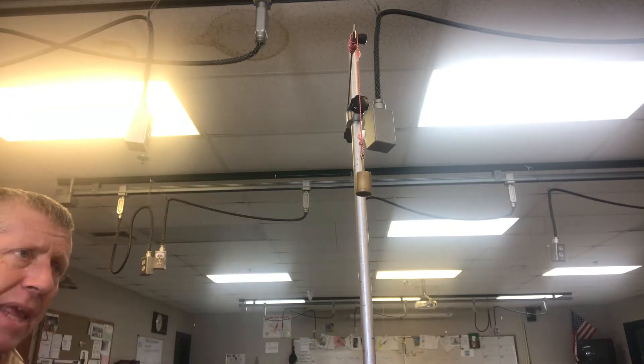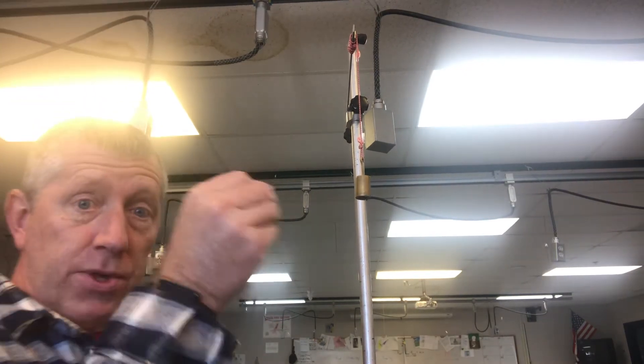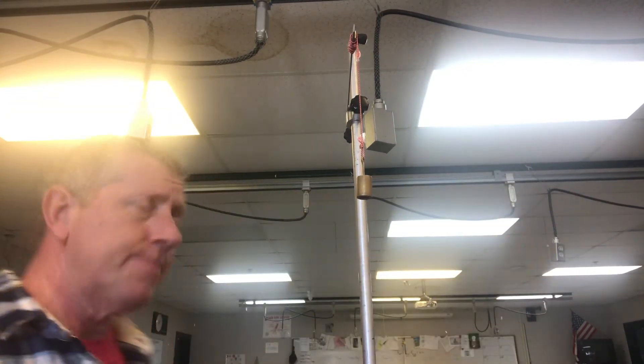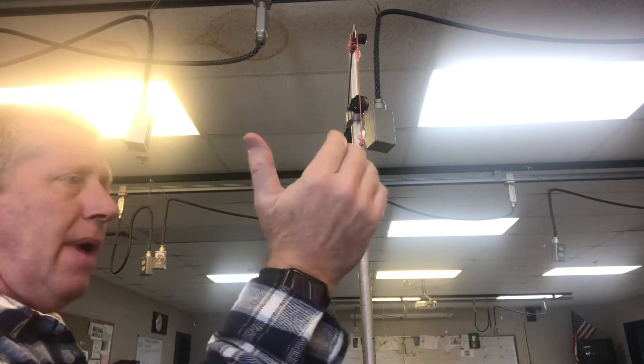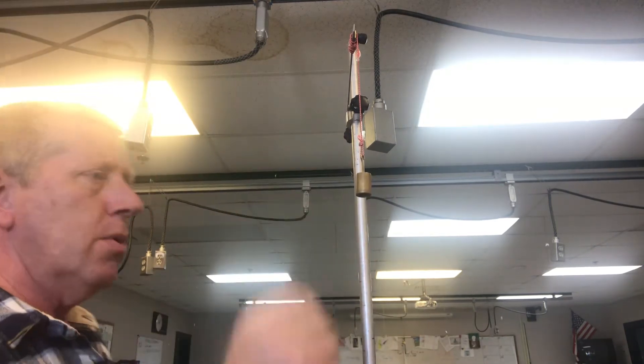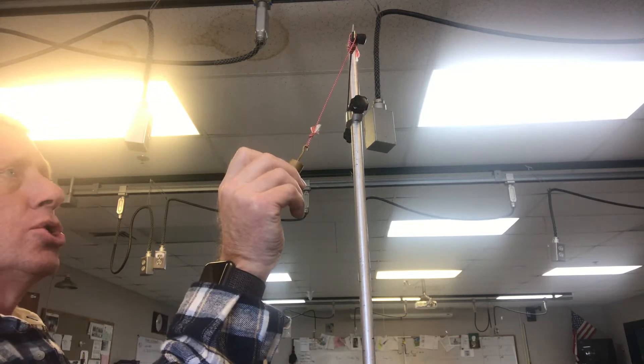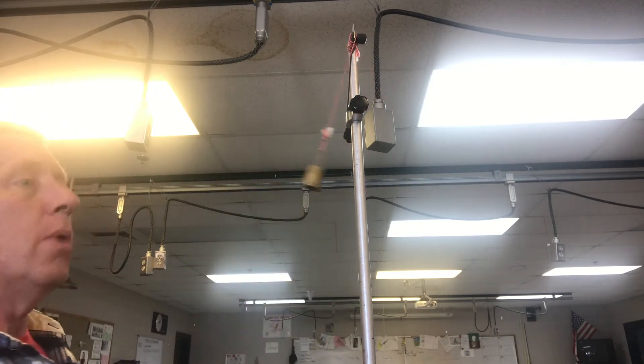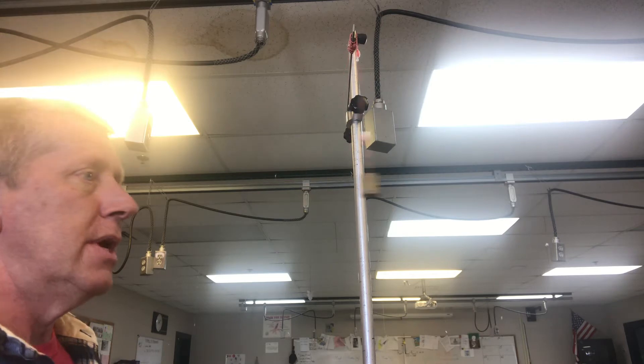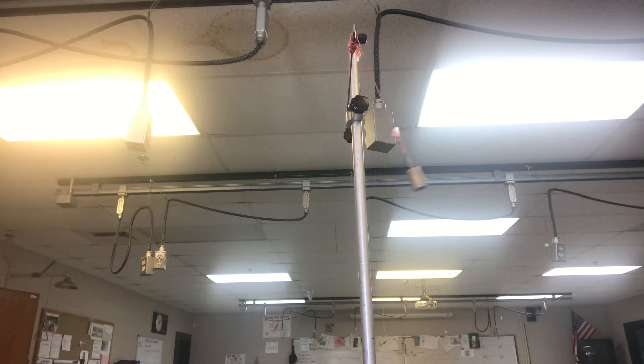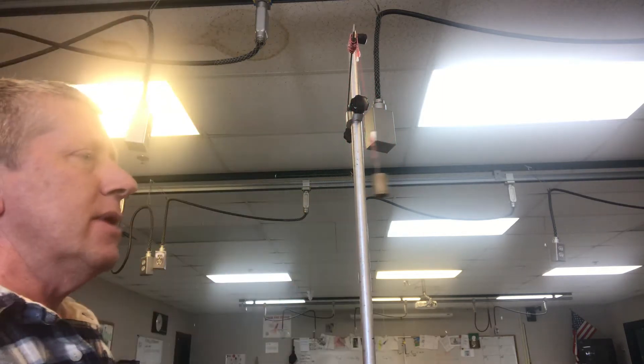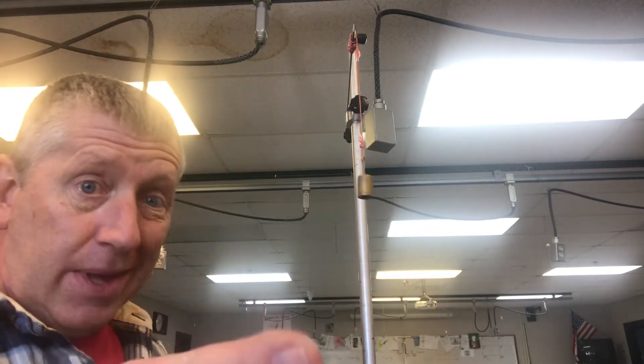So we ready? 20 revolutions, same thing. Remember, one, two, let go, three you start timing. Here we go. Different mass, same length. Let's see what we get for a time. One, two, three, one, two, three, four, five, six, seven, eight, nine, ten, eleven, twelve, thirteen, fourteen, fifteen, sixteen, seventeen, eighteen, nineteen, twenty. Done.